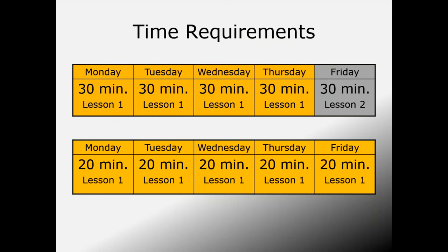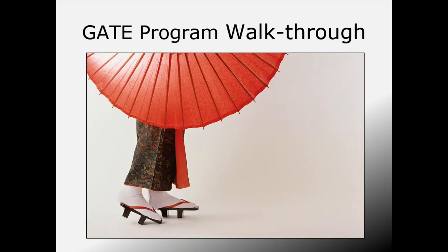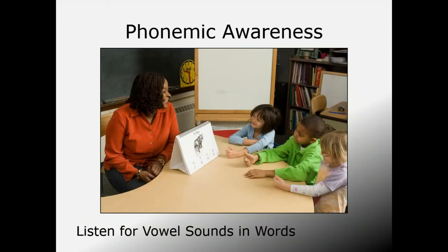GATE lessons should be scheduled daily. One full lesson generally takes about four 30-minute reading periods or five 20-minute reading periods. With 20-minute sessions, you would finish a lesson every five days. With 30-minute sessions, you would begin a new lesson about every four days.